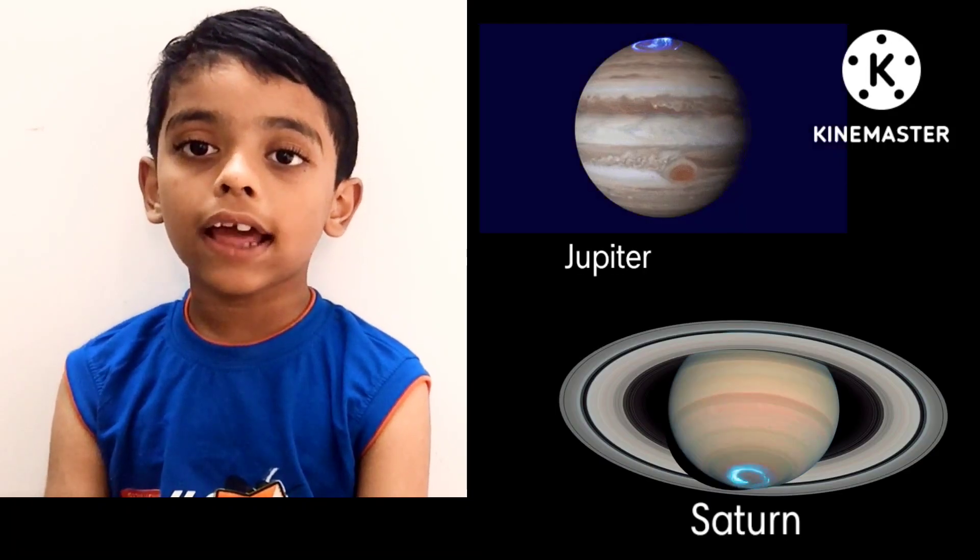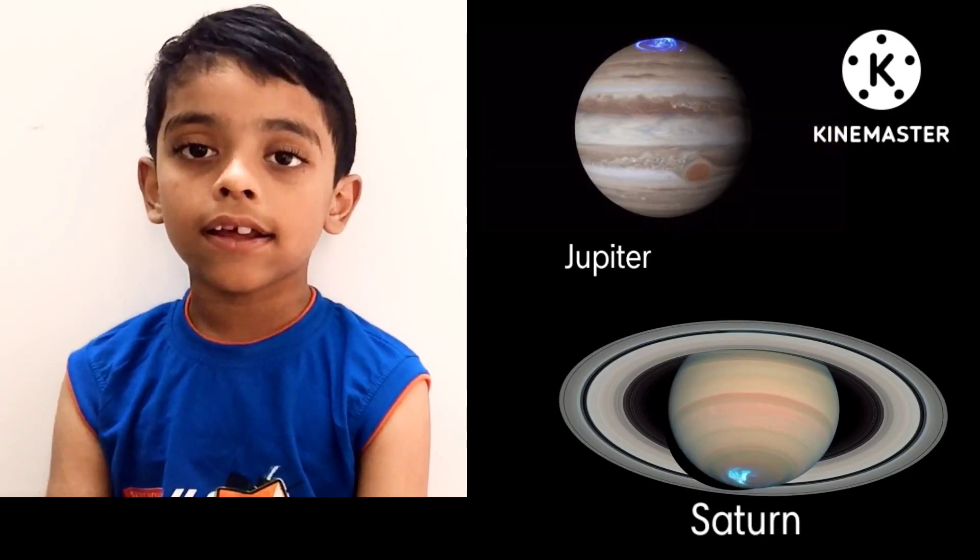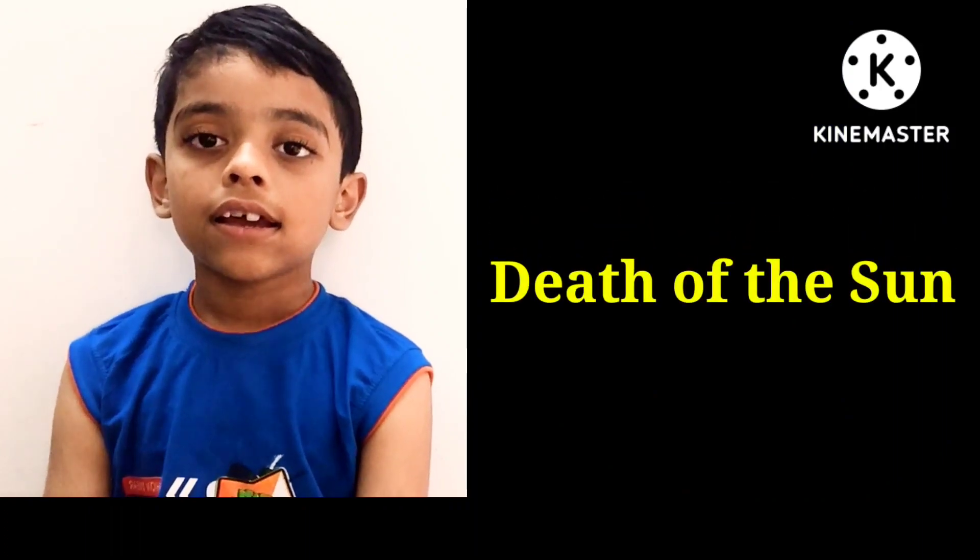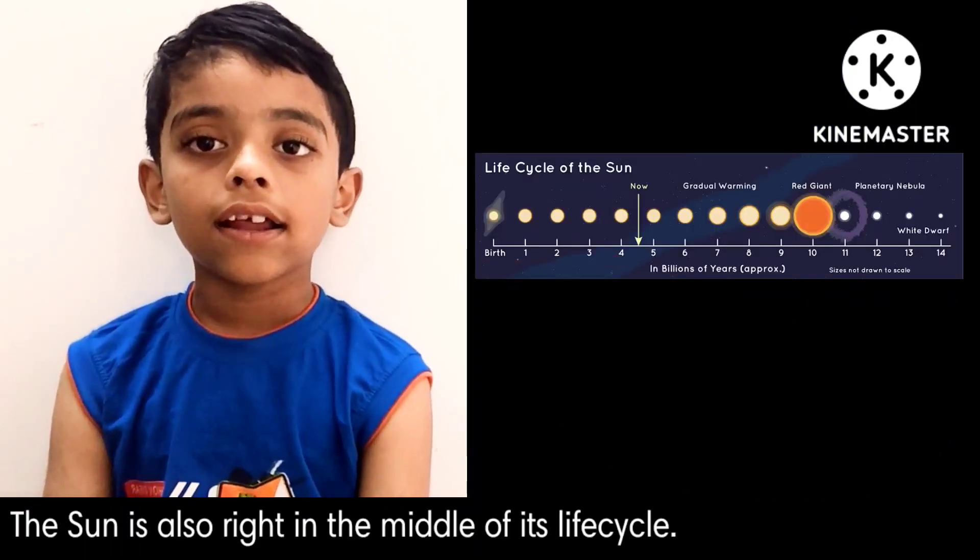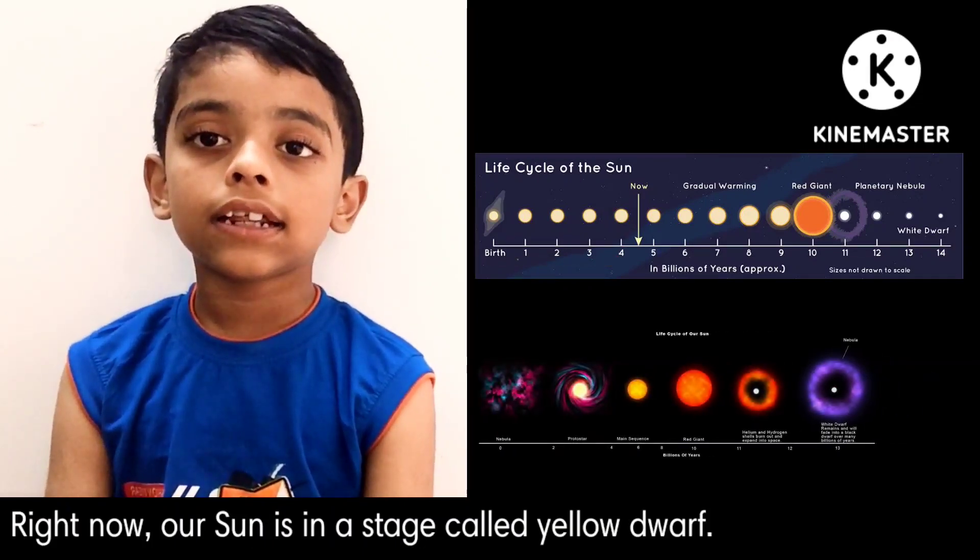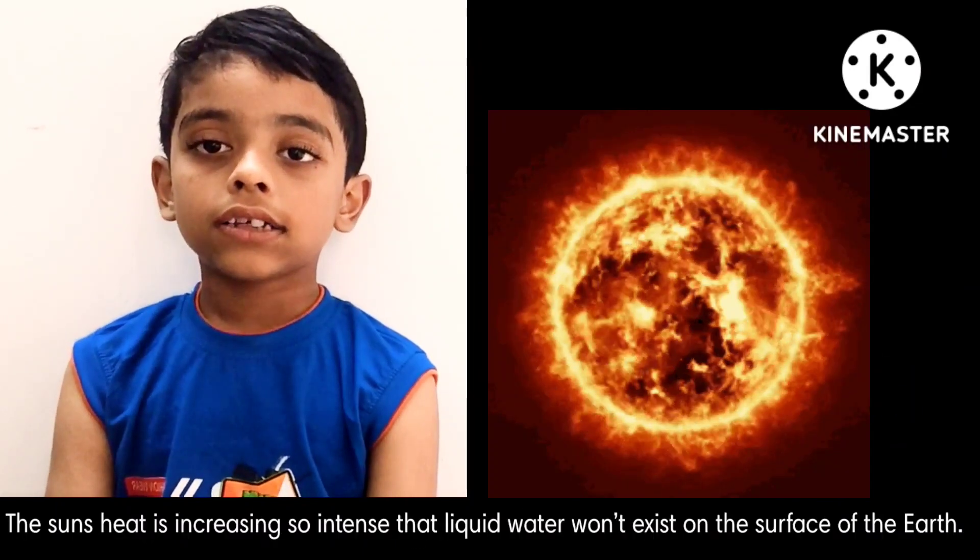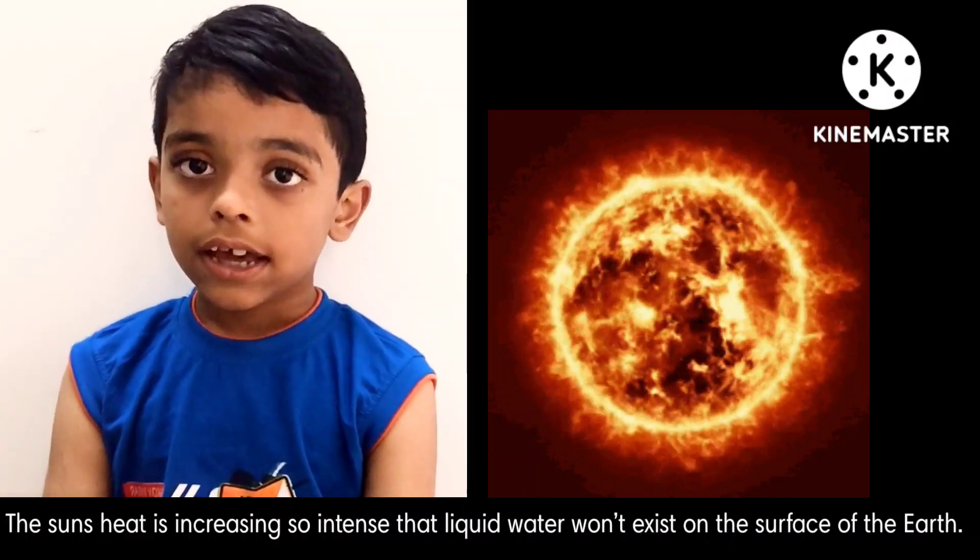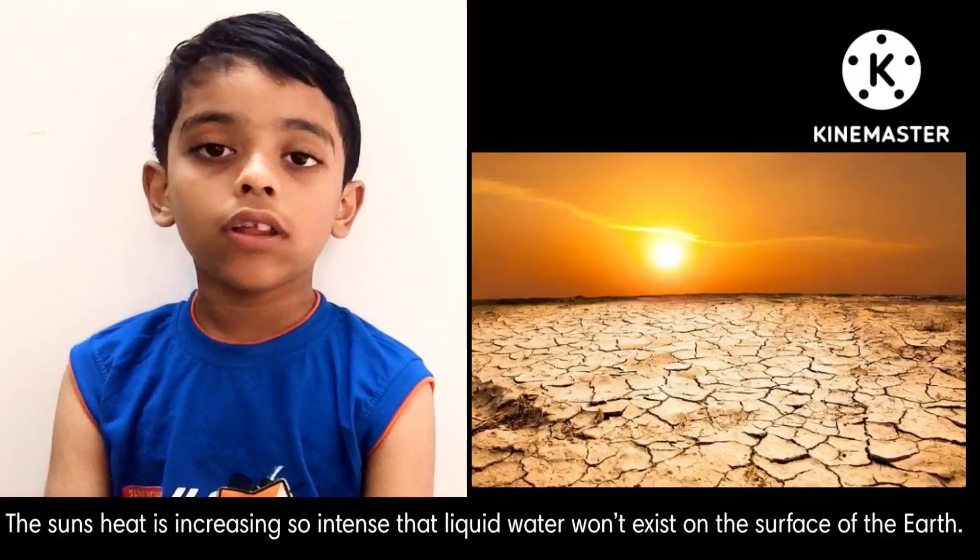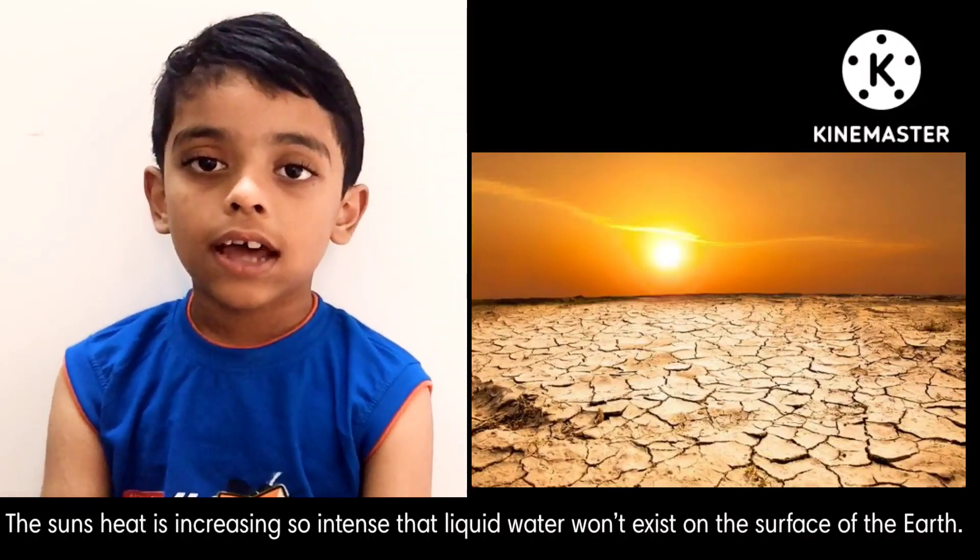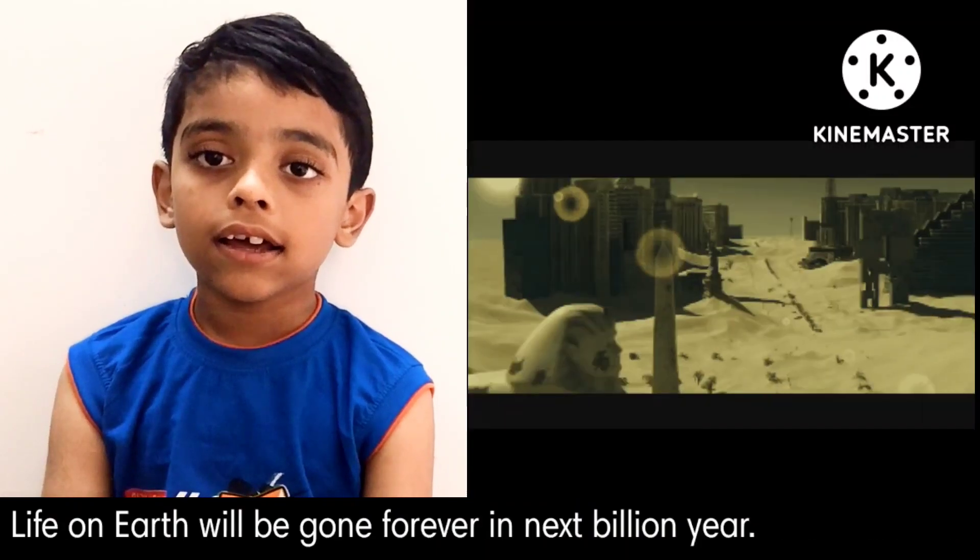Death of the Sun: The Sun is also right in the middle of its life cycle. Right now, our Sun is in the stage called yellow dwarf. The Sun's heat is increasing so intense that liquid water won't exist on the surface of the Earth and life on Earth will be gone forever in the next billion years.